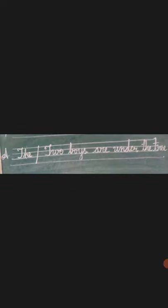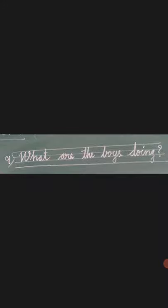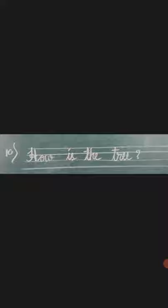Who is under the tree? Maradakya are either. The boys — two boys are under the tree. Eradu kudugaru maradakya are either. Next. What are the boys doing? All the boys are collecting the mangoes. How is the tree? The tree is very, very big.